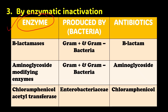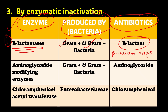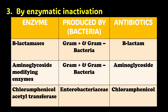The first enzyme is beta-lactamases, produced by both gram-positive and gram-negative bacteria. These enzymes act against beta-lactam antibiotics by breaking the beta-lactam ring present in these antibiotics, thereby inactivating them.